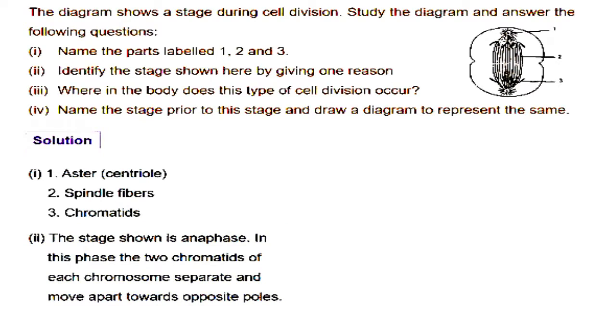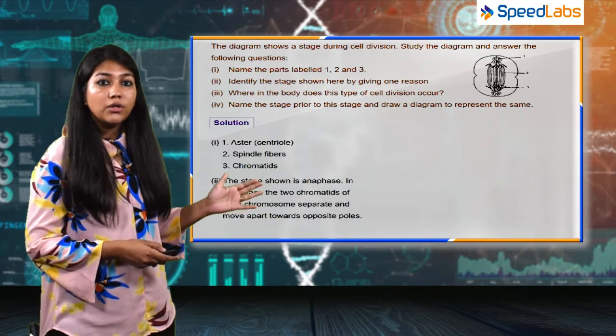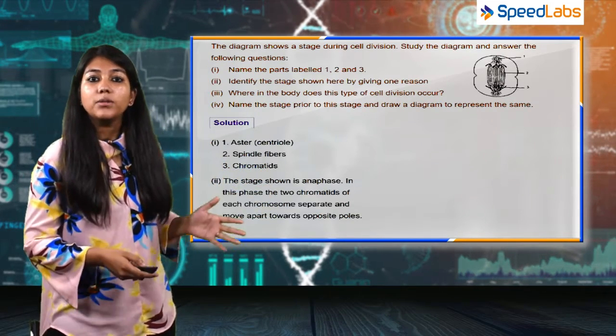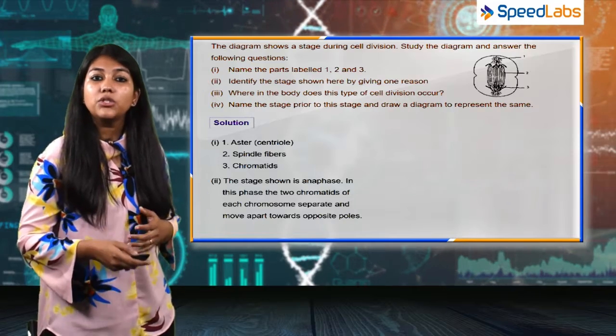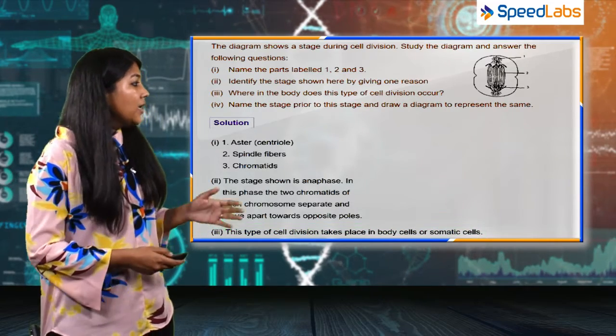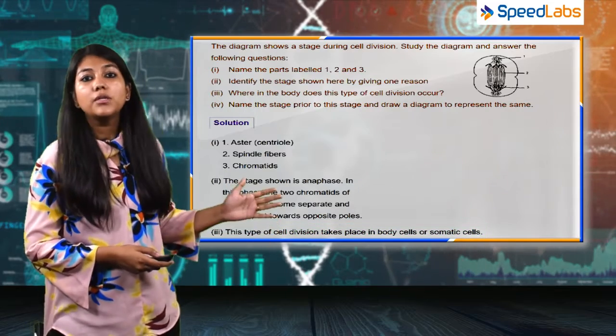The next part asks where in the body does this type of cell division occur. This is about mitosis, which happens in the general body cells or somatic cells. The answer is this type of cell division occurs in the body cells or somatic cells.